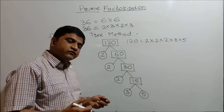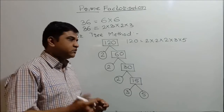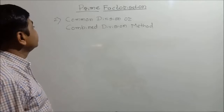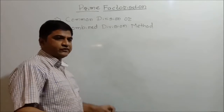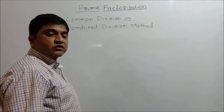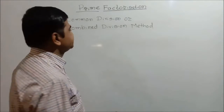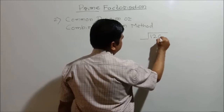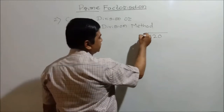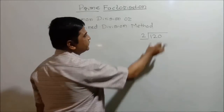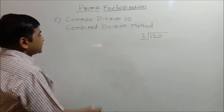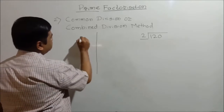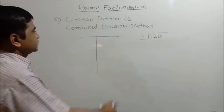Let us go for one more method, which is known as the combined division method or common division method for prime factorization. In the regular division method, we place the dividend inside the division sign and the divisor outside, writing the quotient above. In this method we do something different — we draw a vertical line and then a horizontal line, making a cross like a T. We put the number in the right upper corner.